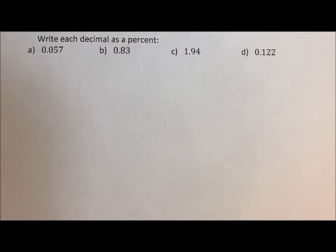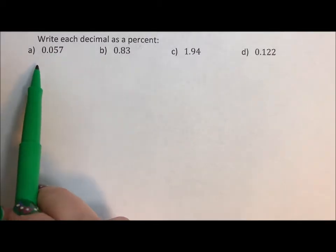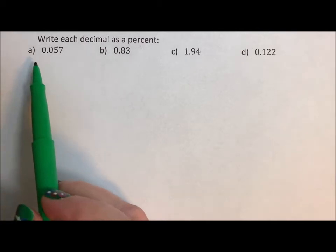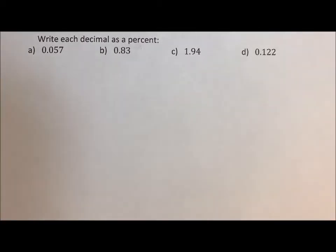The reason we use percents is because decimals can get really small and kind of ungainly to use. So what we do is we multiply them by 100 and then we say this is the number per 100.